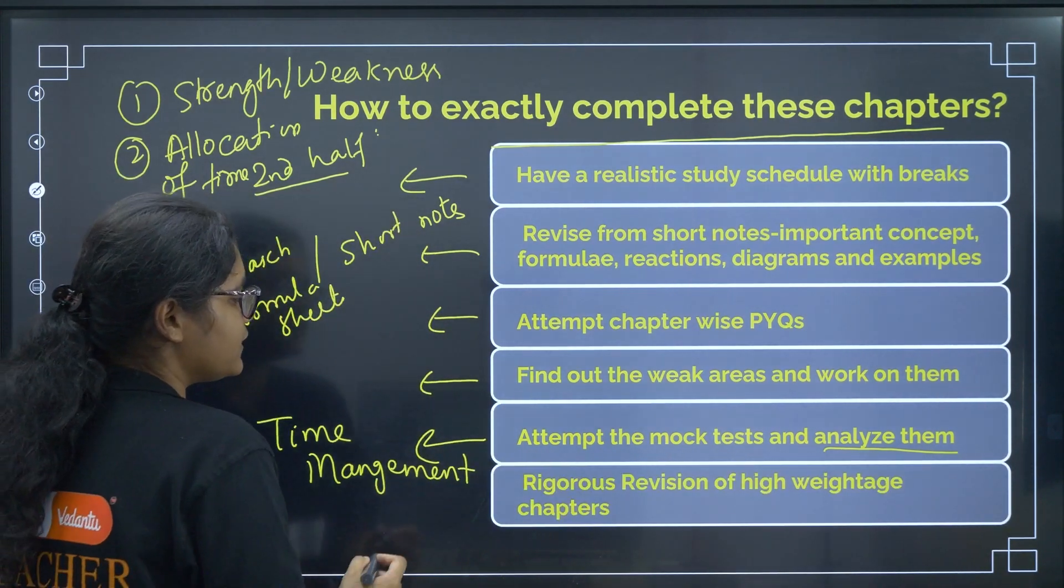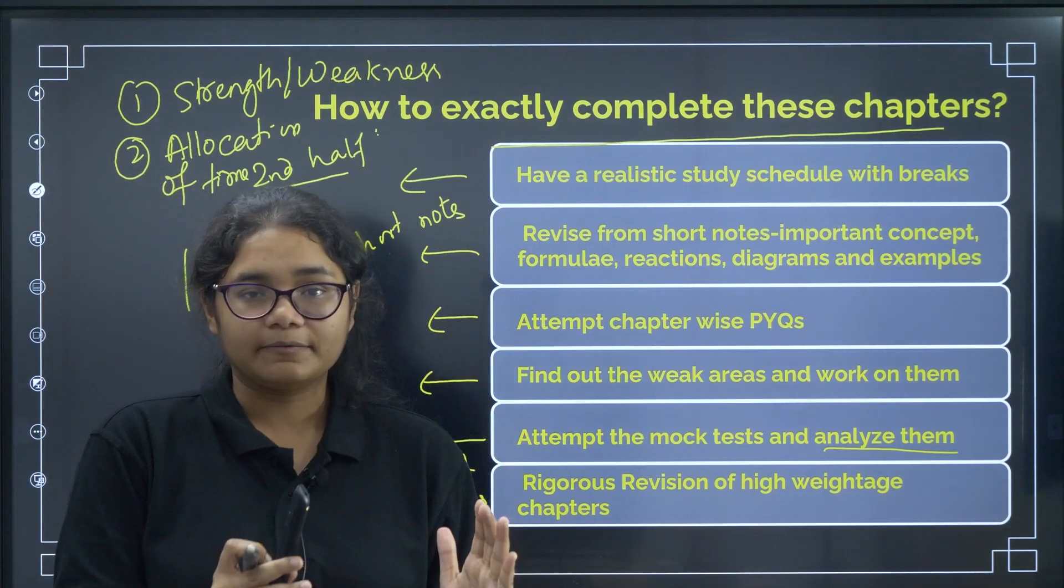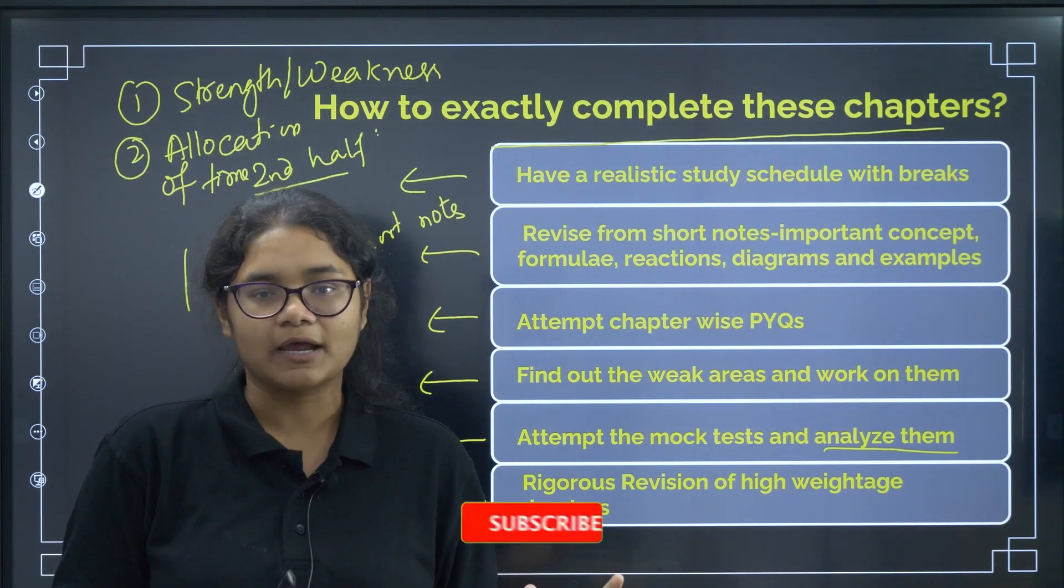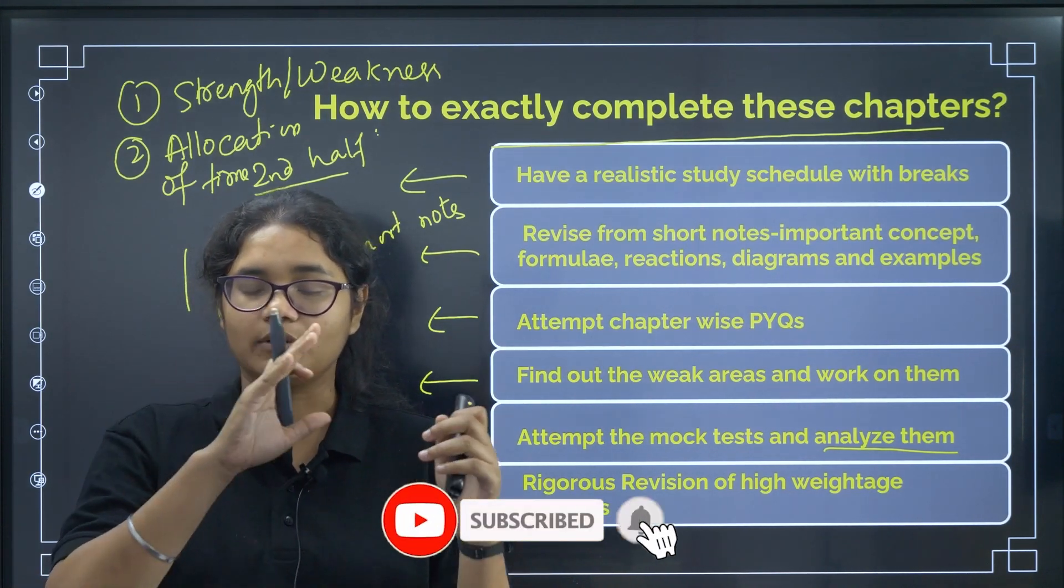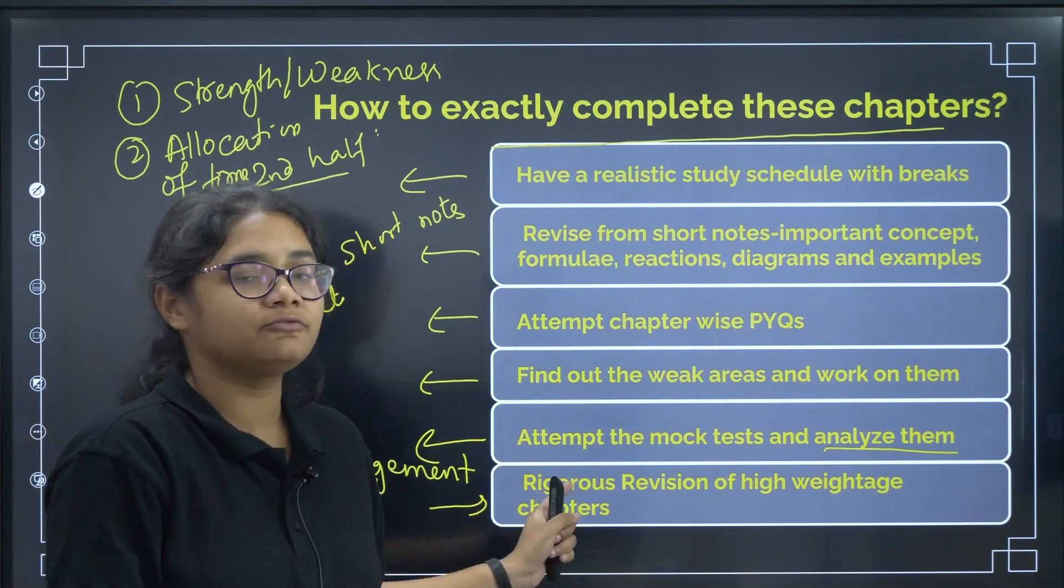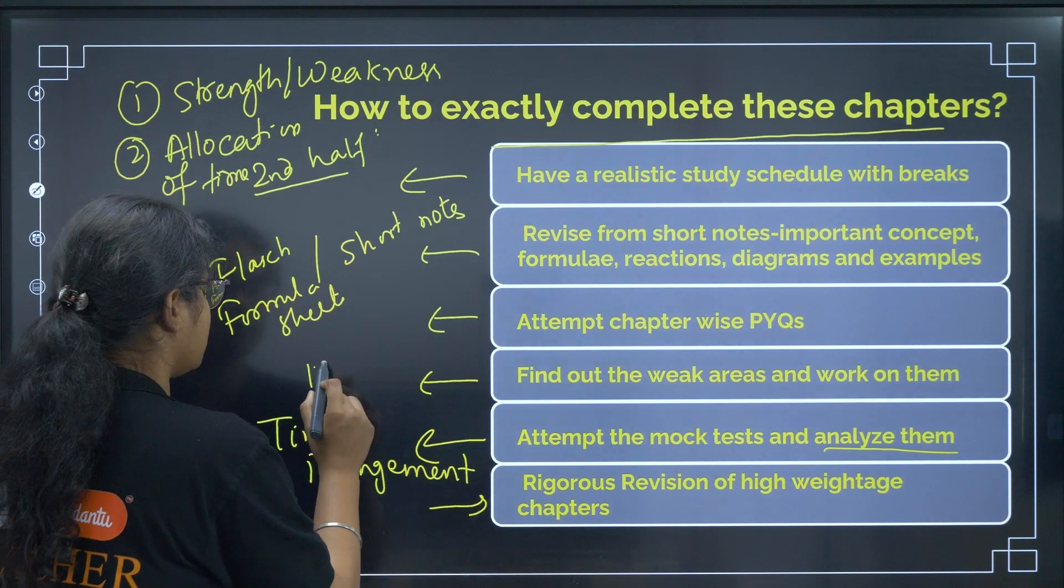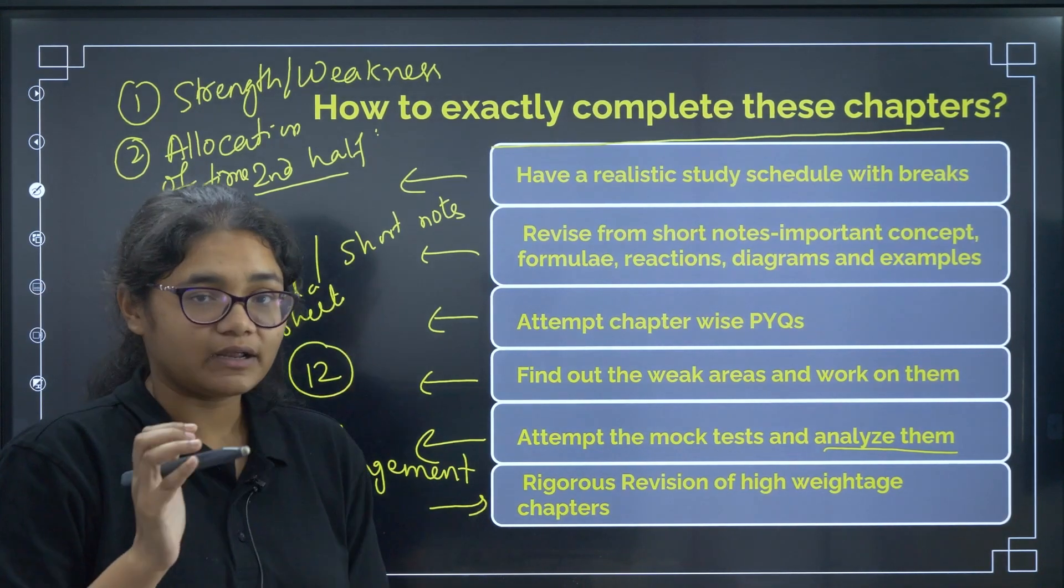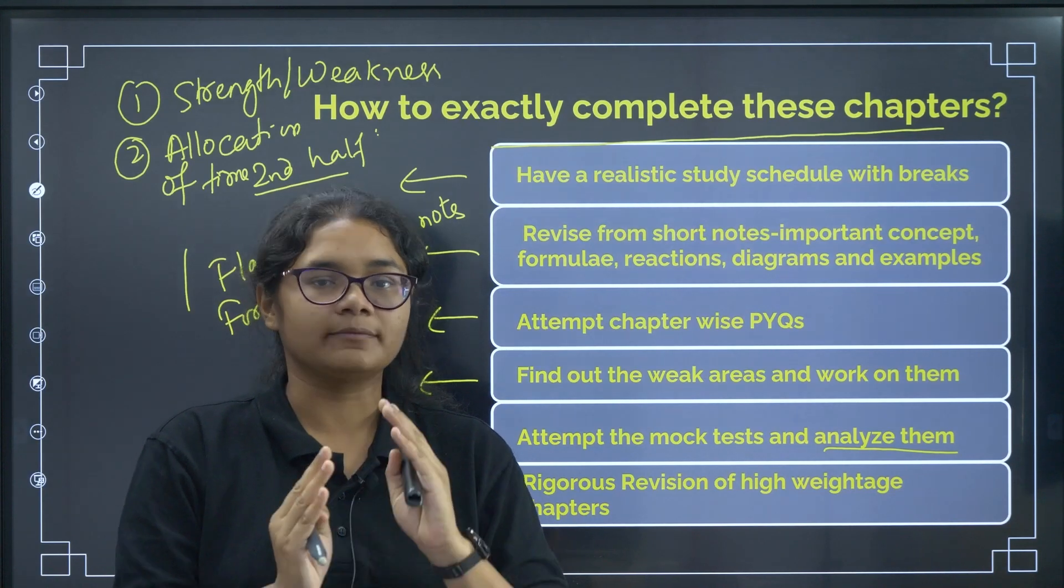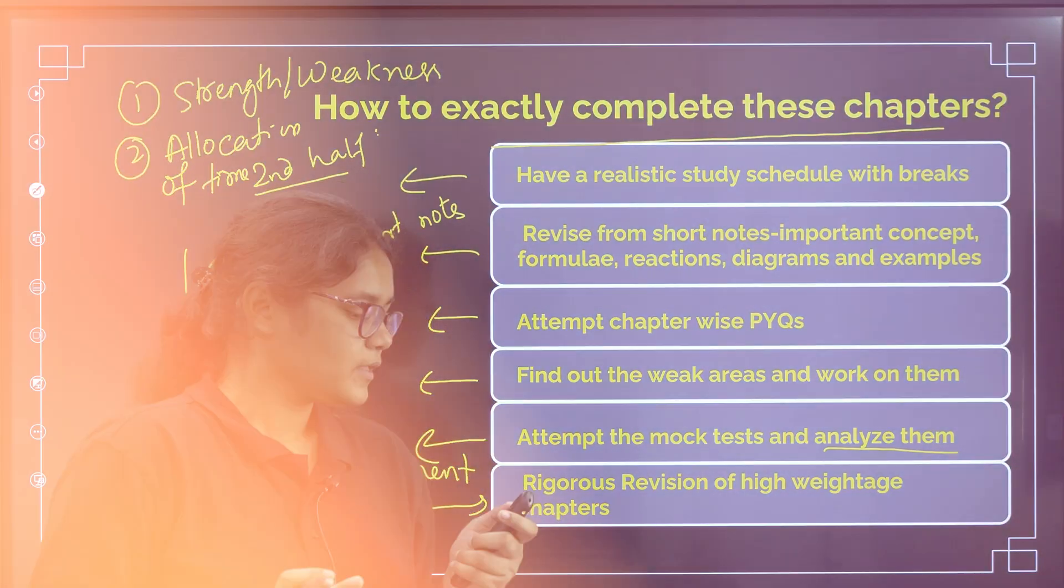Next, we have rigorous revision of high weightage chapters. Again and again telling. Ten chapters from the twelfth standard are very very important. Give more attention to those chapters. If something is left, you are not able to do it now from the first year, leave it. No problem. You can still score good marks if you focus on the high weightage chapters. And all the high weightage chapters are your PU 2 chapters. So, it will not be very difficult because you have just written the board exams also. So, just focus on high weightage chapters. If you have time, you can go to the first PU chapters.